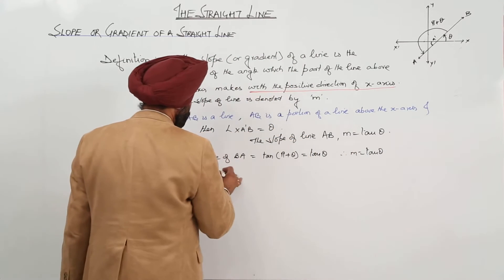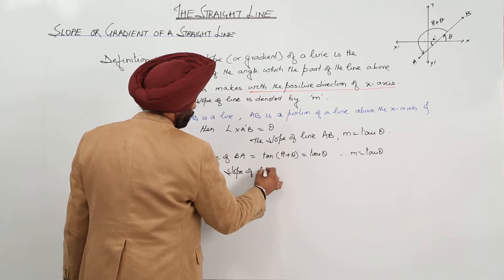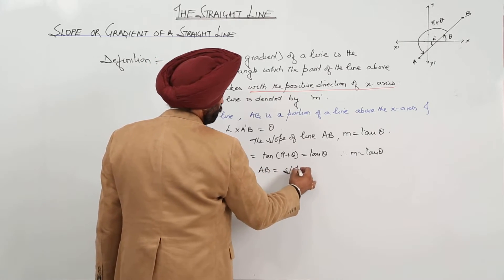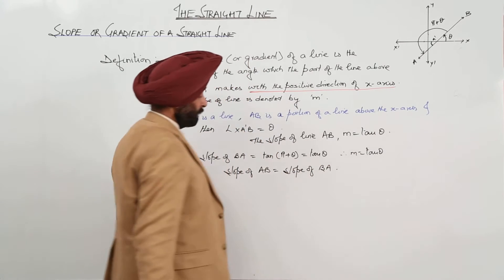Now, what we can write? We can write: slope of AB is equal to slope of BA. One thing.